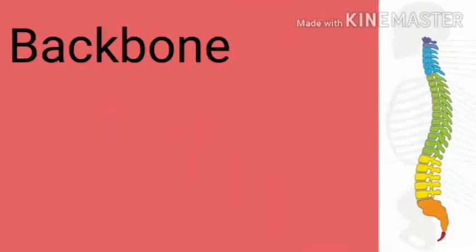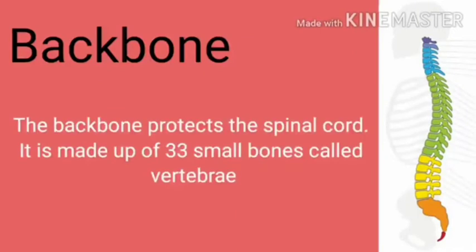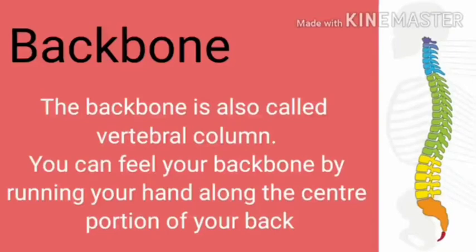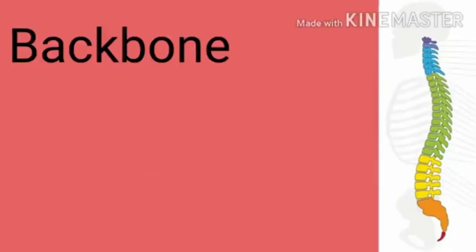The next part is the backbone. The backbone protects the spinal cord. It is made up of 33 small bones called vertebrae — the singular is vertebra. These bones help us in turning, bending, twisting, and keeping our body upright. The backbone is also called the vertebral column. You can feel your backbone by running your hands along the center portion of your back. The backbone is connected to the skull on one side and the hip on the other side.